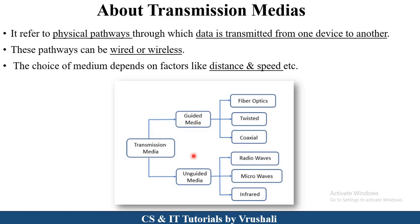Transmission media has two types: guided media and unguided media. Guided media is again divided into three types — fiber optic cable, twisted pair cable, and coaxial cable. Unguided media is again divided into three types — radio waves, microwaves, and infrared. Now let's discuss all these media in detail.